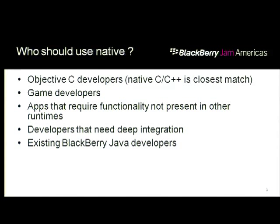Our approach is that new APIs arrive at the native SDK first before making their way up to other runtimes. So if you want to stay ahead of the technology curve, you're better off using the native SDK — you'll have all the APIs there first. There's also deep integration with services and the platform that you get in Cascades and native.